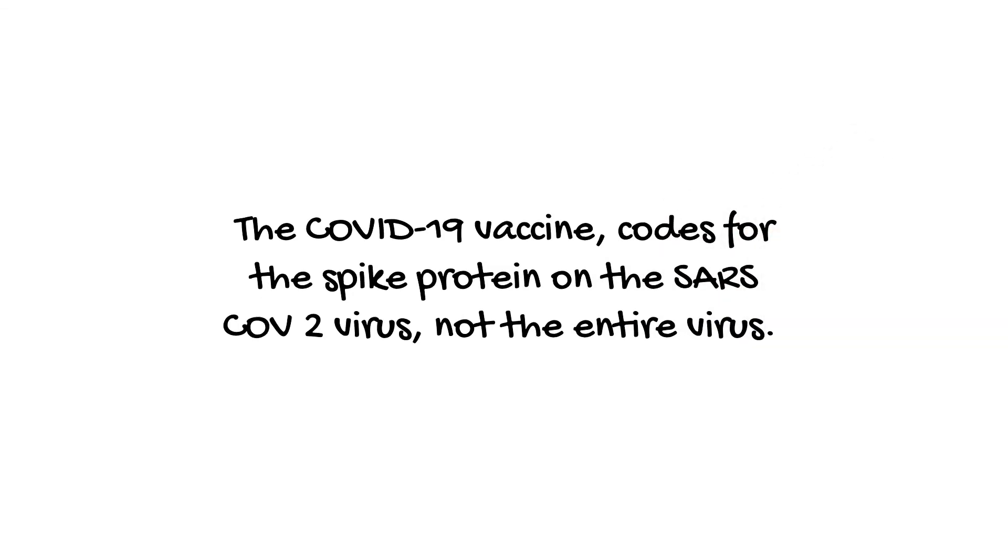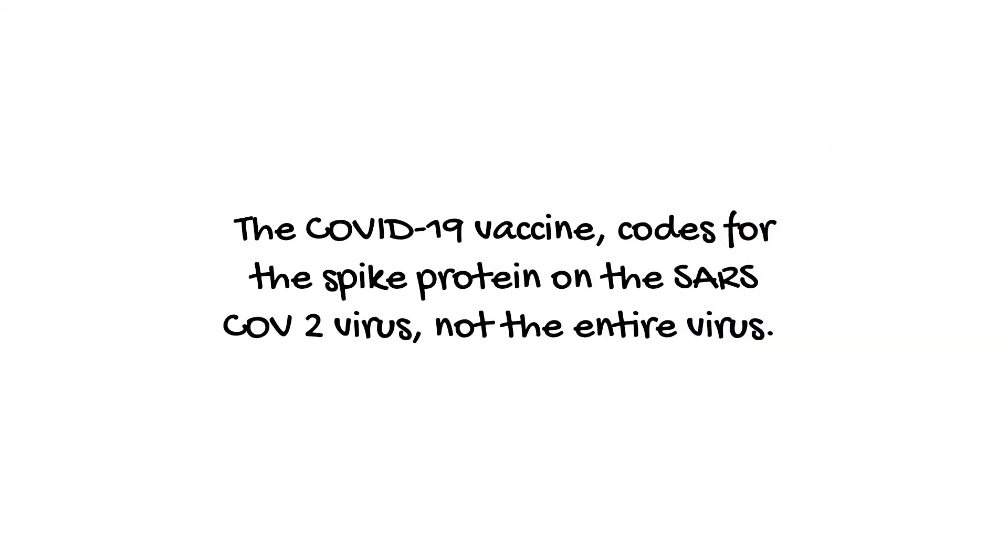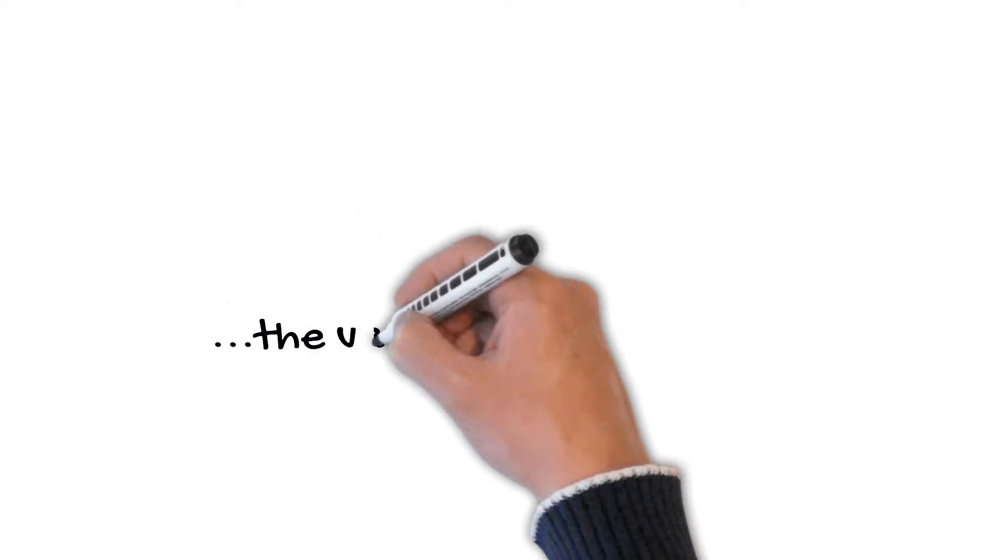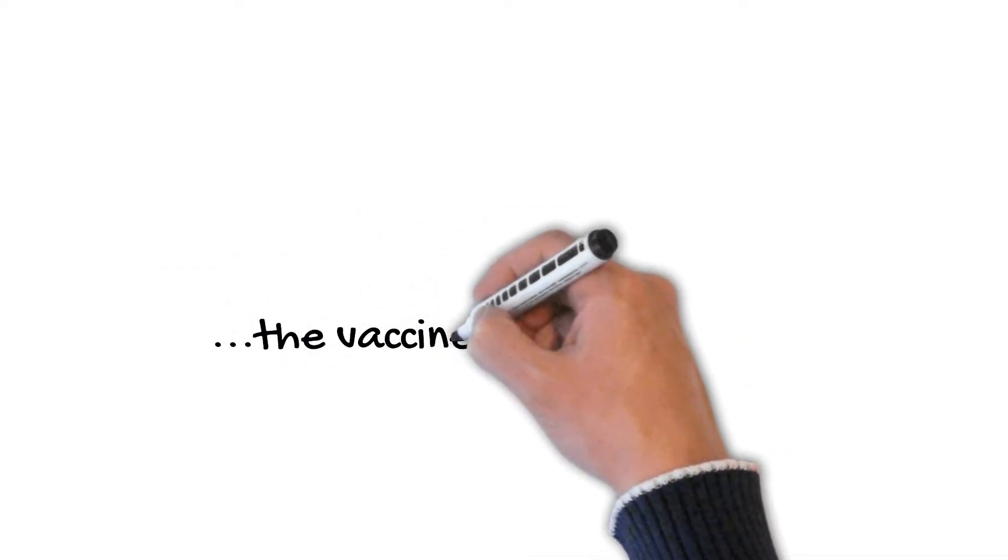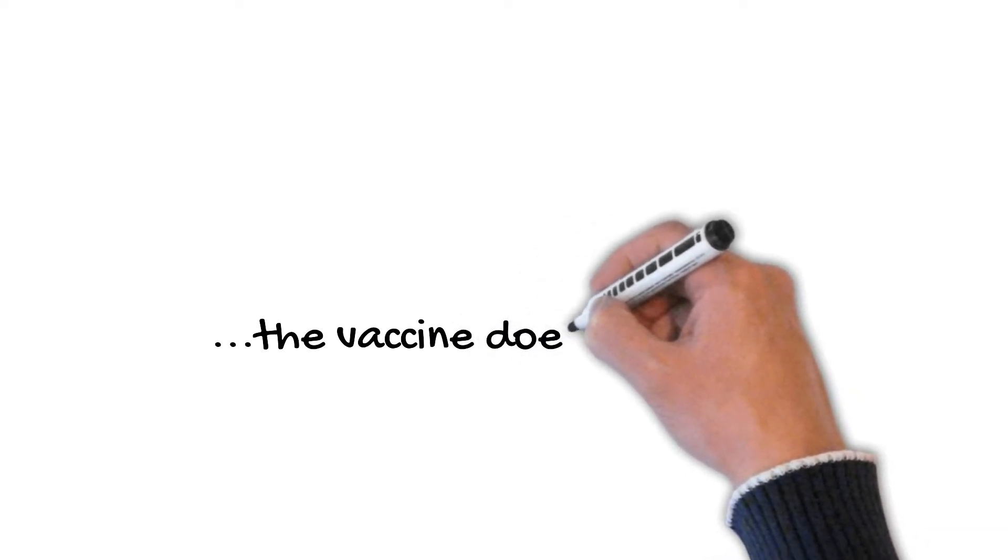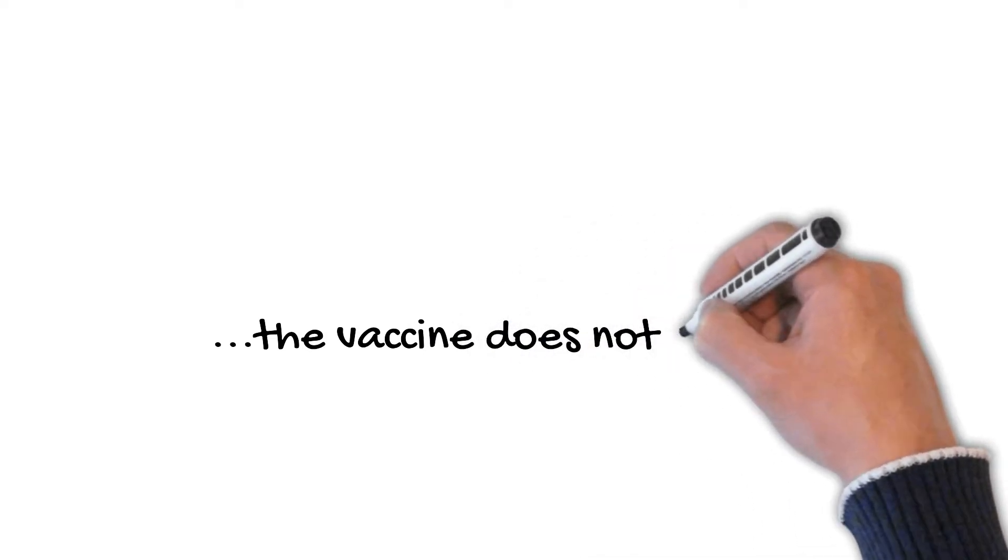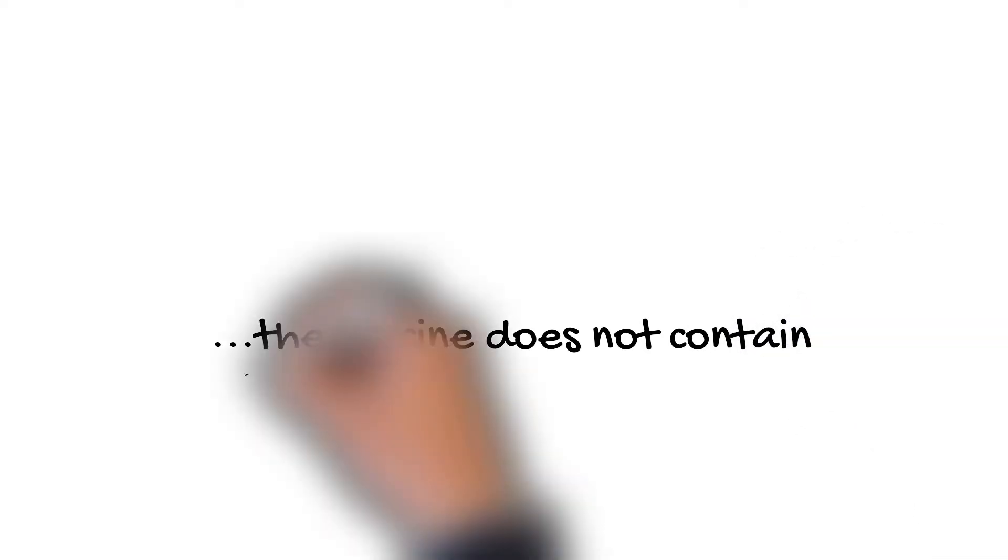The COVID-19 vaccine codes for the spike protein on the SARS-CoV-2 virus, not the entire virus. Let me repeat that again. The COVID-19 vaccine codes just for the spike protein, that spike protein that exists on the virus. The vaccine does not code for the entire virus.